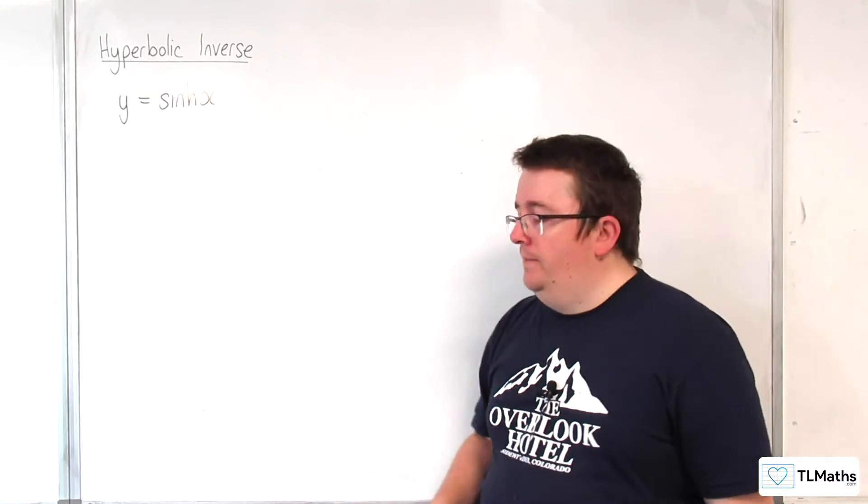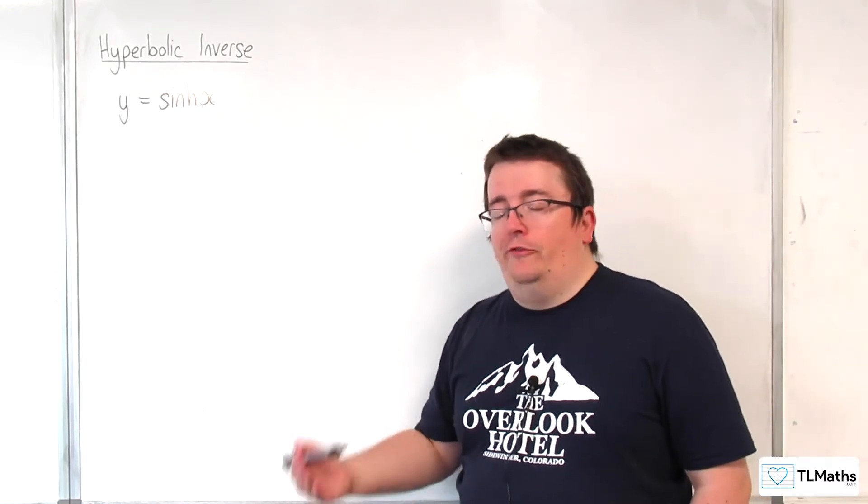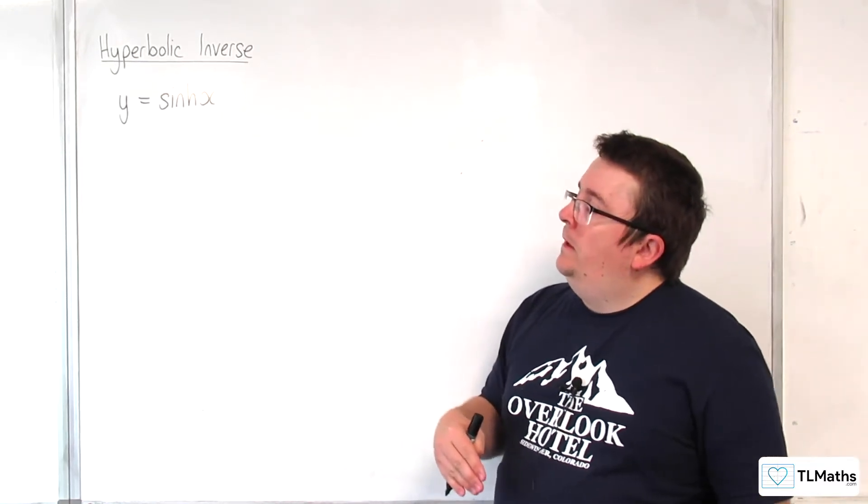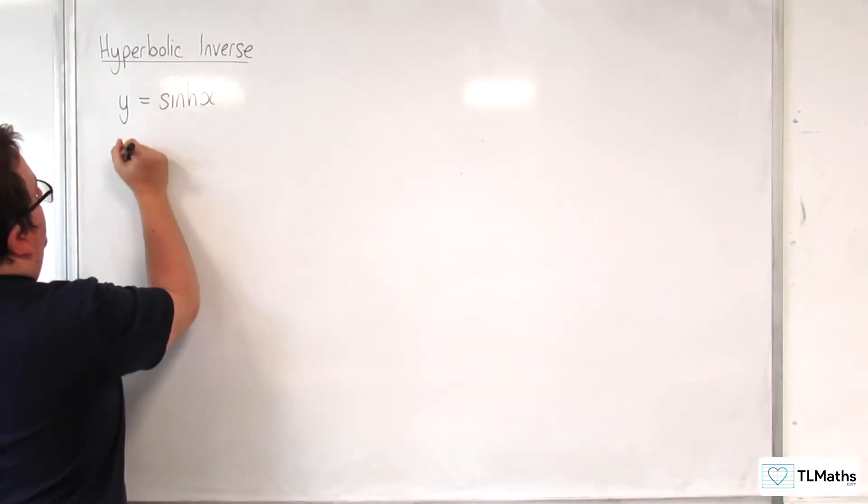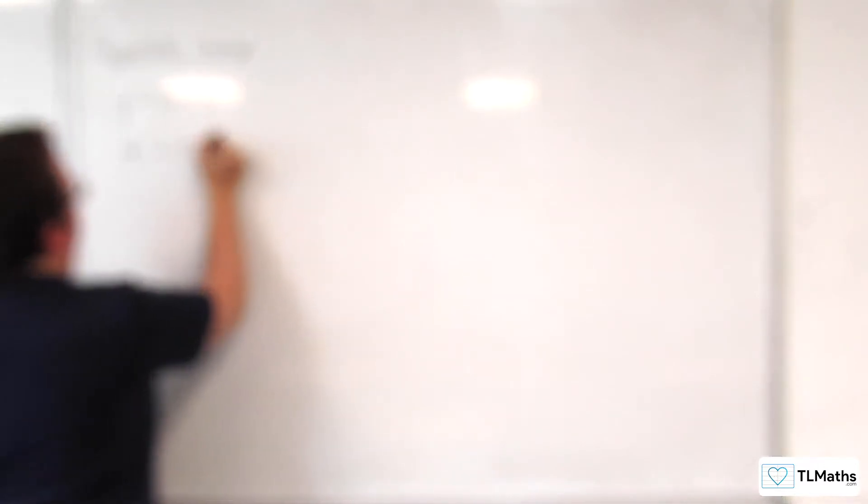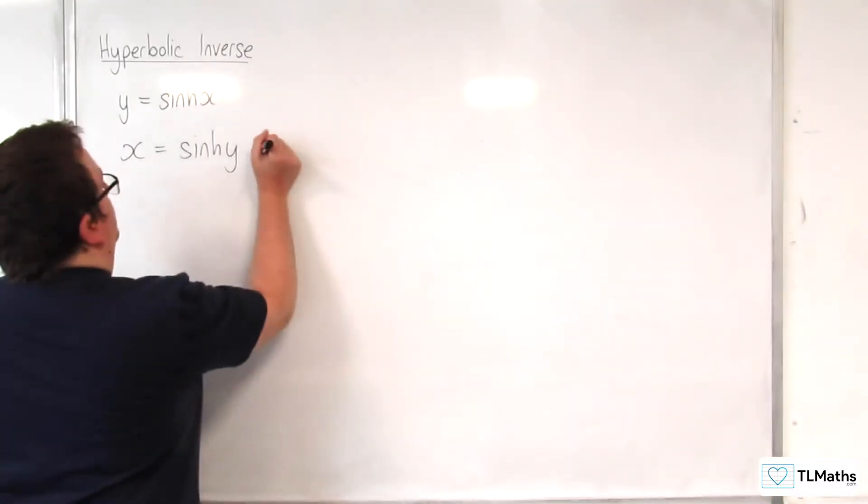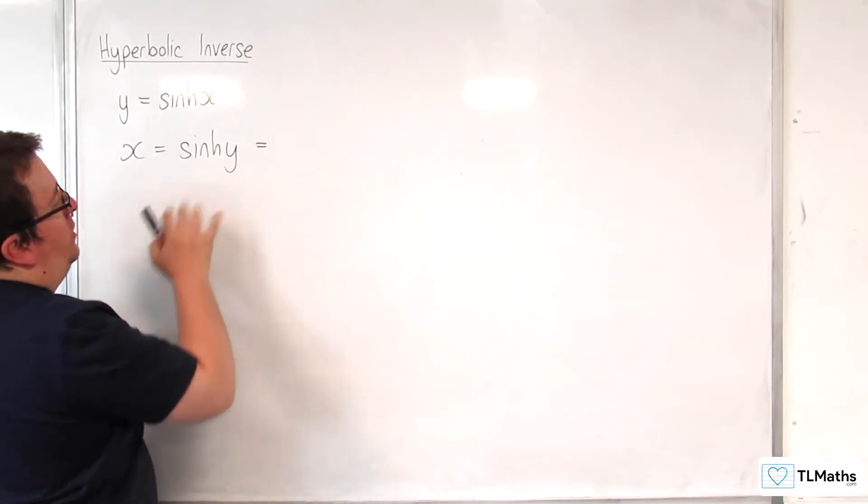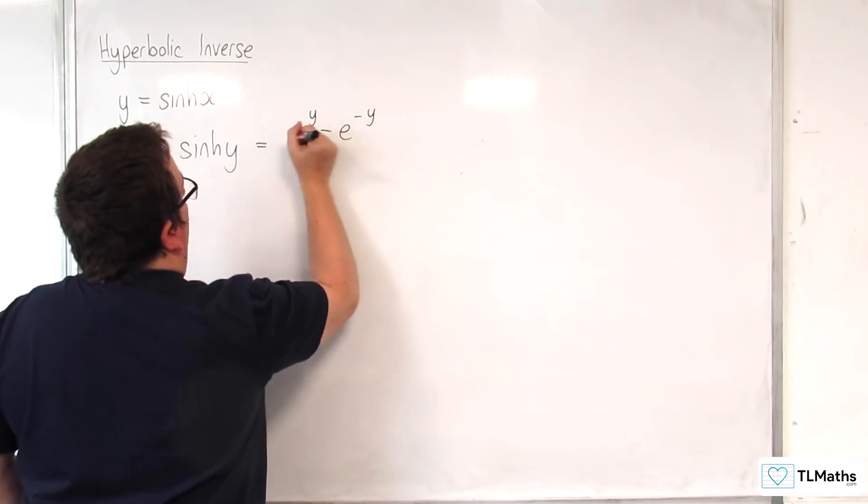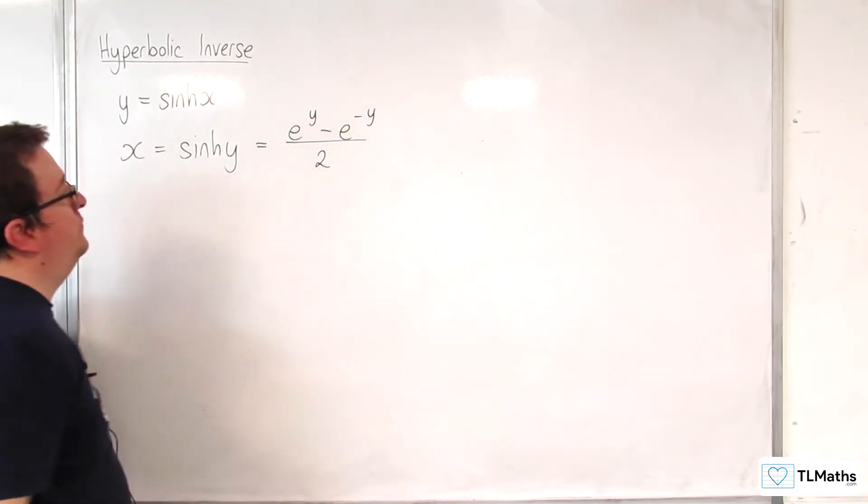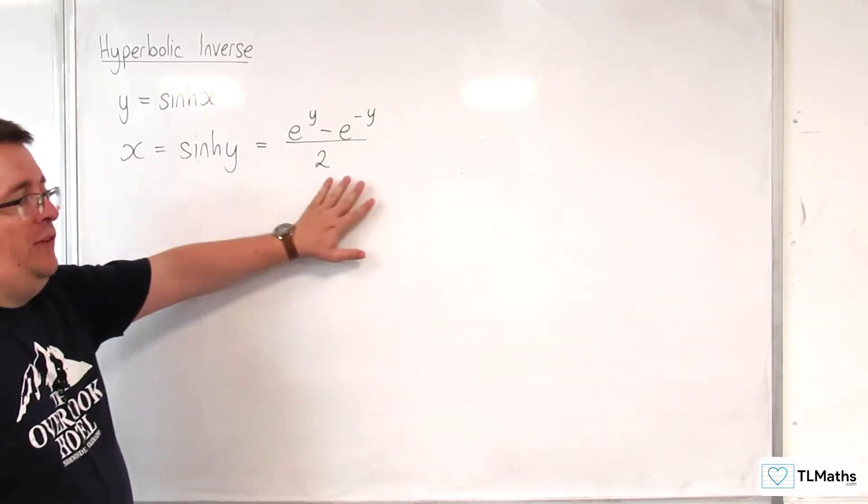Now the way to do that is to use our knowledge of finding an inverse function. So the first thing that we would do is we would swap the x's and y's. What that does is it reflects the graph in the line y equals x. So we know sinh of y would be e to the y take away e to the minus y over 2. So x is equal to this.